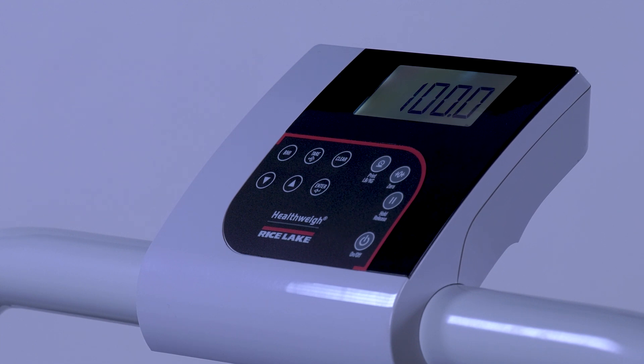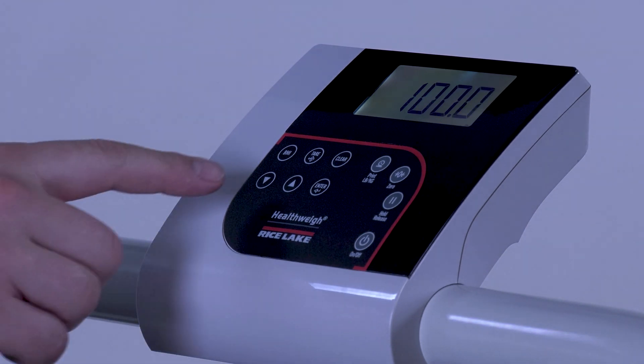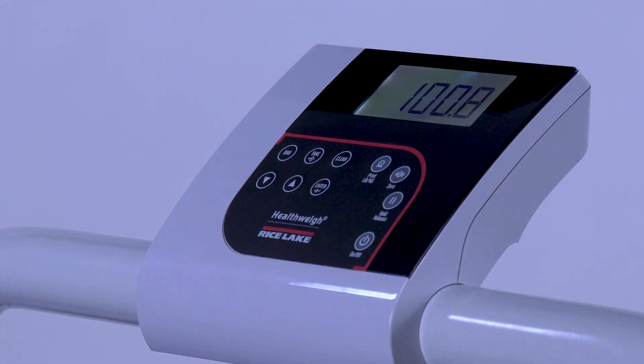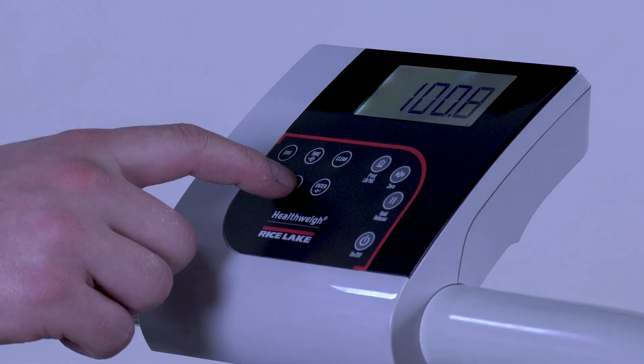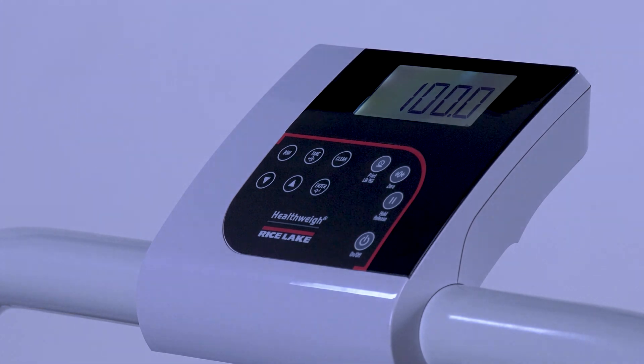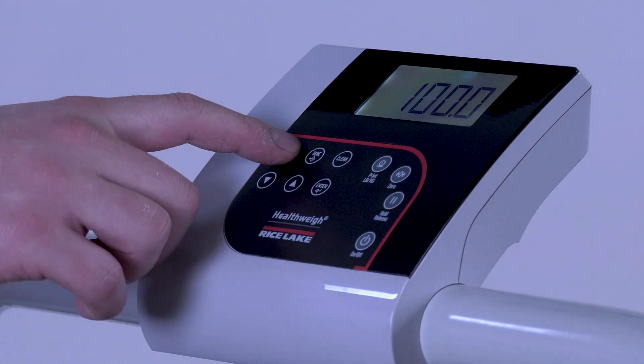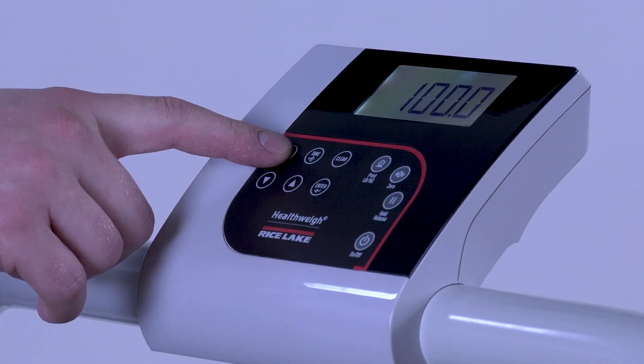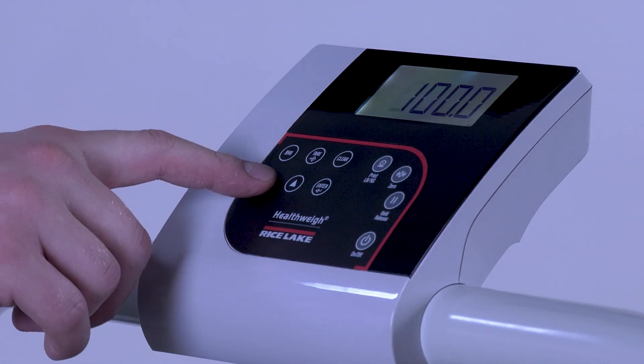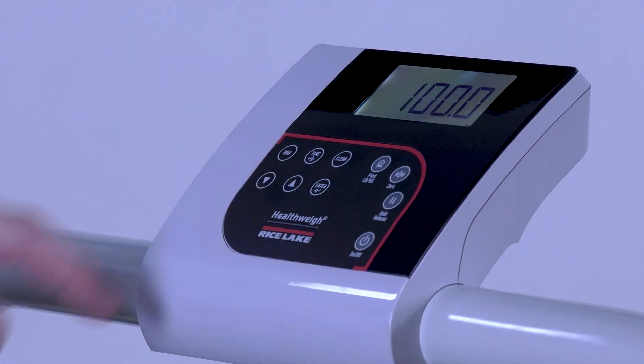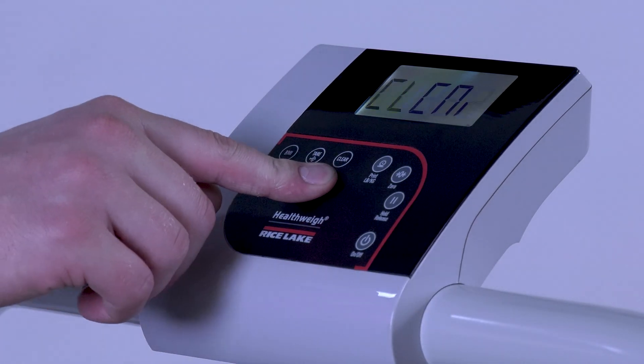The digit farthest to the right will be flashing. If necessary, change the load value by pressing the Up or Down key. To adjust the digits, press the BMI key until the desired digit is flashing. Then change the value using the Up or Down key. Once the load value is correct, press the Enter key.